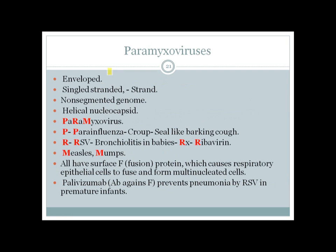Paramyxoviruses are also negative-strand — 'P for Paramyxovirus' from the mnemonic. There are four important viruses: Para-influenza, RSV (Respiratory Syncytial Virus), Measles, and Mumps, remembered from the name ParaMyxovirus: P for Para-influenza, R for RSV, M for Measles and Mumps.